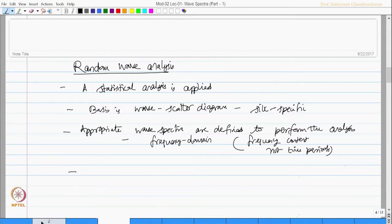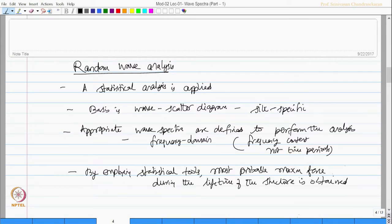Once you do this, by choosing an appropriate wave spectra, then by employing statistical tools, one can get the most probable maximum force during the lifetime of the structure. This can be verified by Bygel 1977 and Furnace 1977.